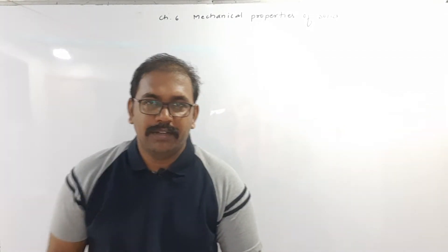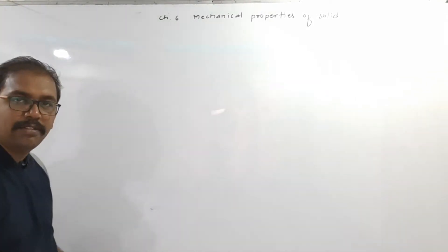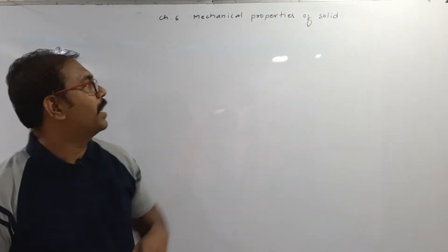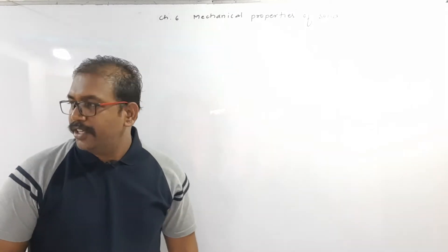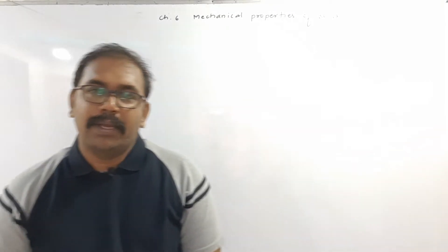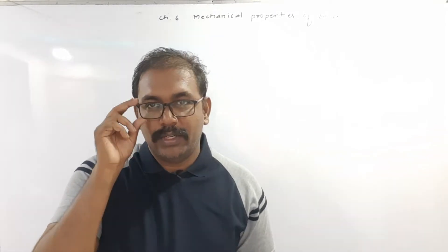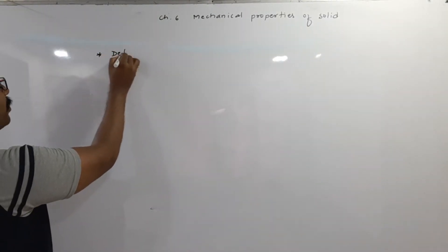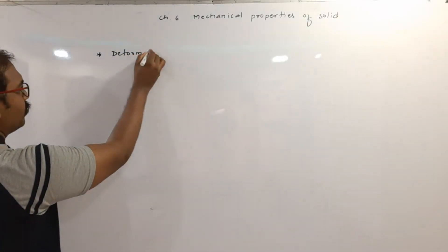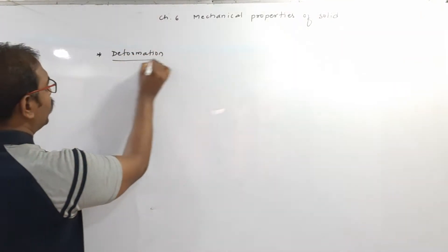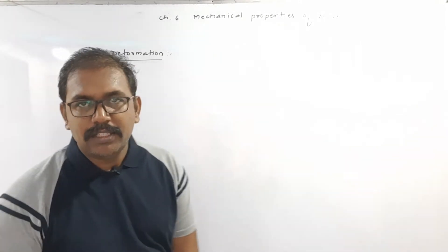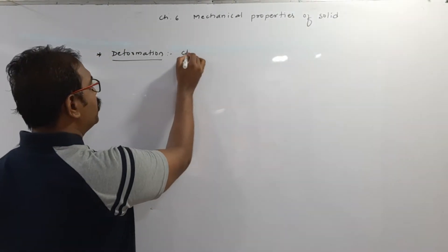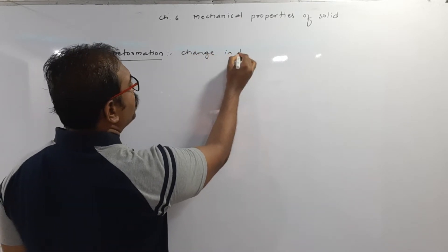Hello everyone. In today's session we have to start a new chapter from the syllabus of 11th standard — chapter number 6, Mechanical Properties of Solids. Initially, let me cover some basic concepts which will help us learn this chapter. The first basic concept is deformation. Deformation means change in size and shape of a body, or in short, change in dimension.